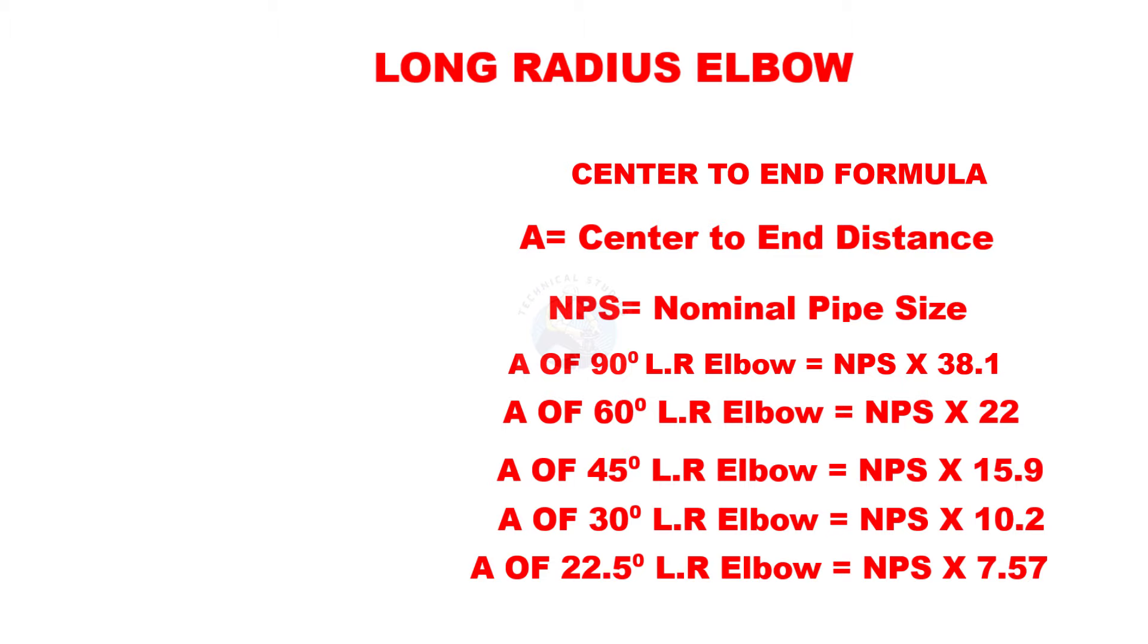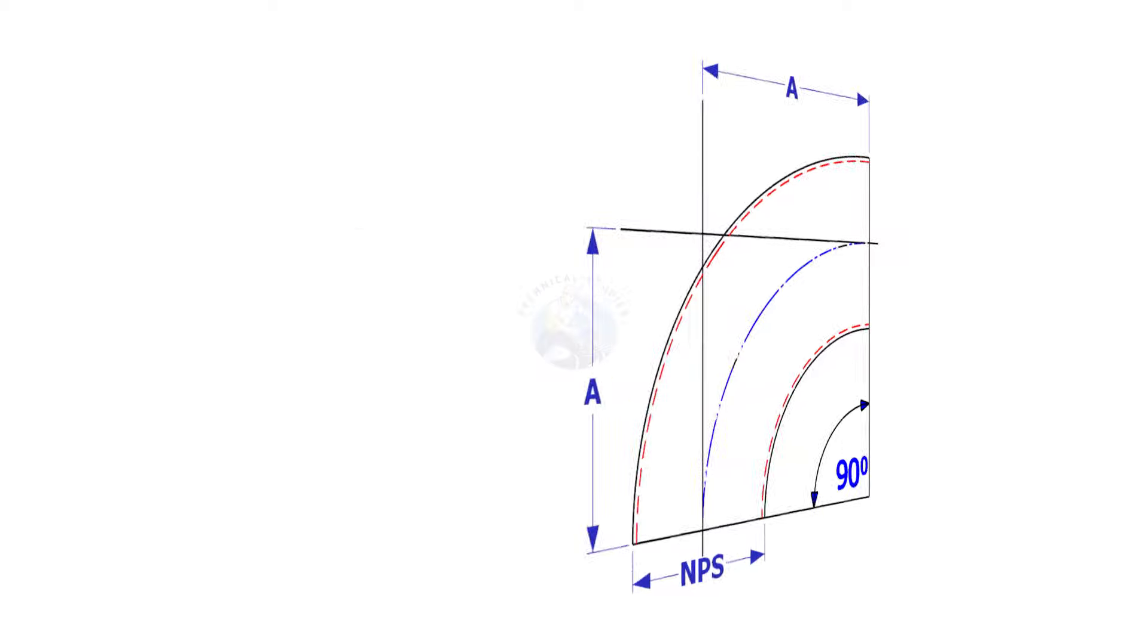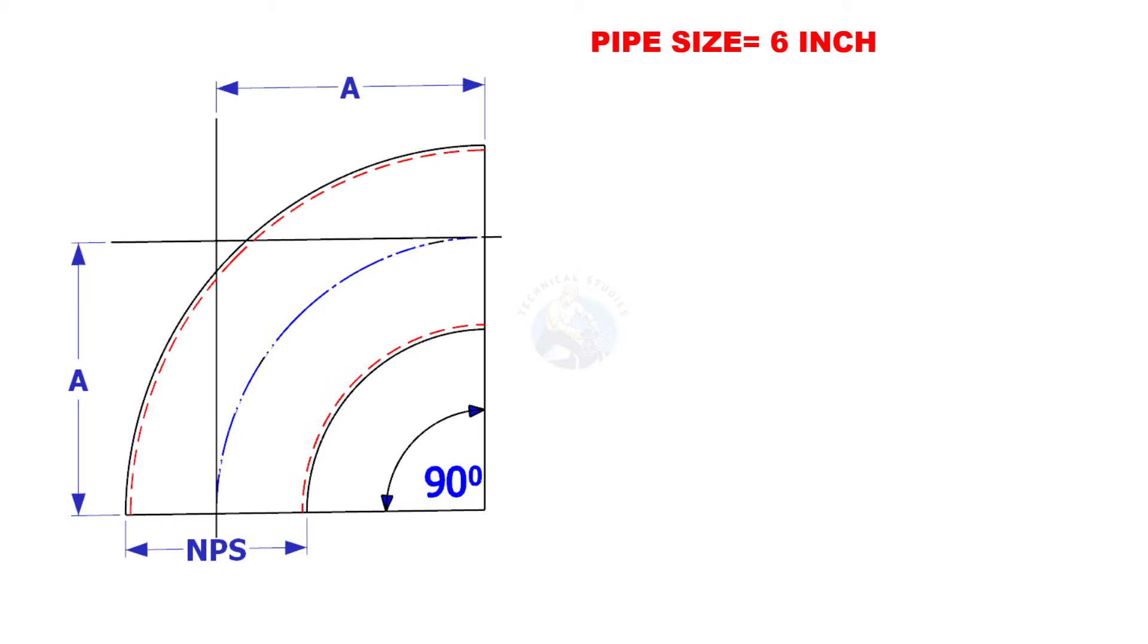Let us try some examples. Assume that the pipe size is 6 inches and the degree is 90. Multiply 6 by 38.1. The center to end distance of this elbow is 228.6 millimeters.